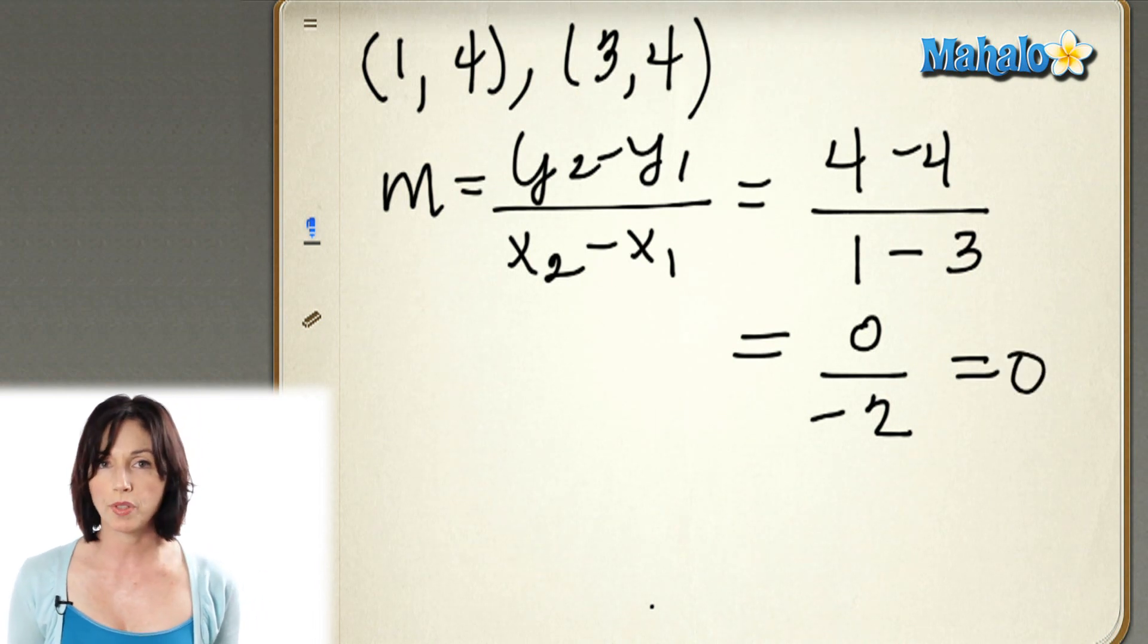So I have a slope of 0. Now, since slope is measuring how much a line inclines or declines away from the horizontal, this line, the one that joins these two points, isn't inclining or declining at all away from the horizontal.